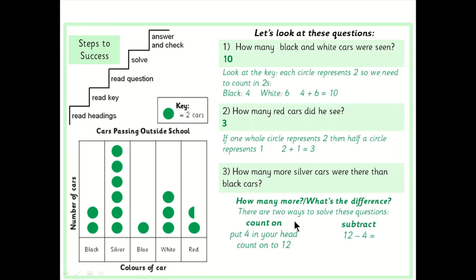Now the other way you could do it is you could do a subtraction. If you know you've got 12 here and four here just do 12 take away four. Put 12 in your head, 12, 11, 10, 9, 8. I'm getting the answer eight.